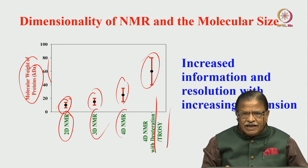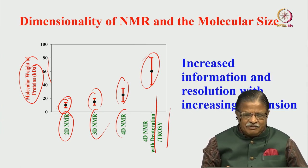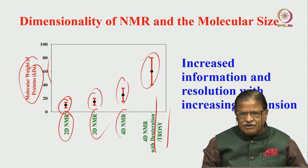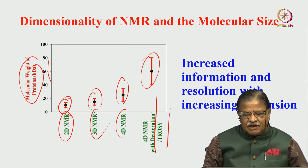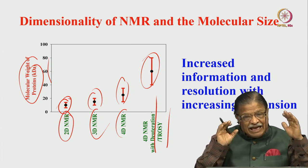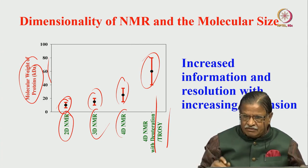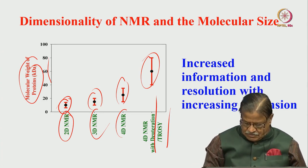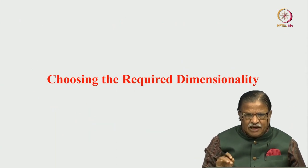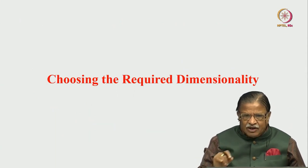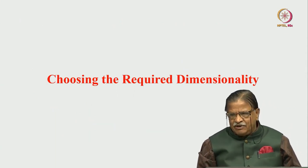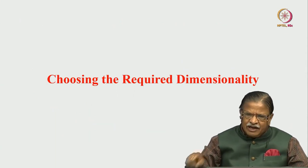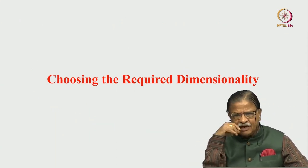You cannot take a small molecule and do 5D NMR — what is the use of that? If you want to do multi-dimensional NMR, it depends upon molecular size. For example, a molecule of a few kilodaltons, say 20 to 30 kDa, just 2D NMR will do. Around 30–50 kDa, 3D NMR is needed. Slightly above 40–50 kDa, 4D NMR. If you go to 50, 60, 80 or 90 kDa, you not only need 4D NMR, but additional techniques like deuteration and isotope labeling.